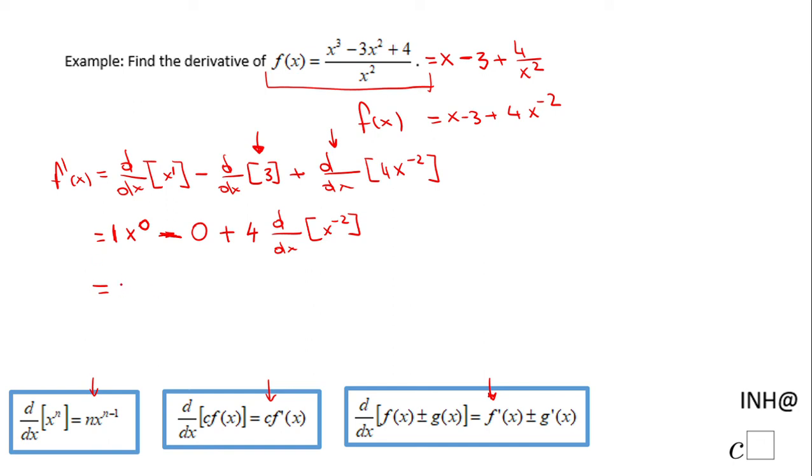This is just 1 - 0 + 4 times the derivative. The derivative of x^(-2) is -2x^(-2-1) = -2x^(-3). So the final form is 1 + 4(-2)x^(-3) = 1 - 8x^(-3).